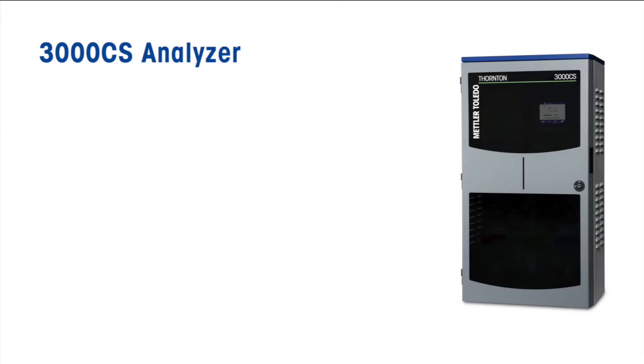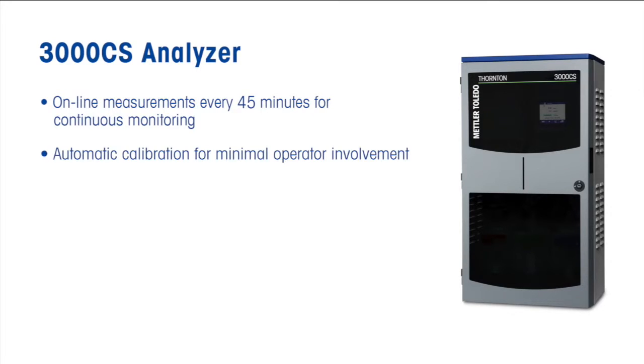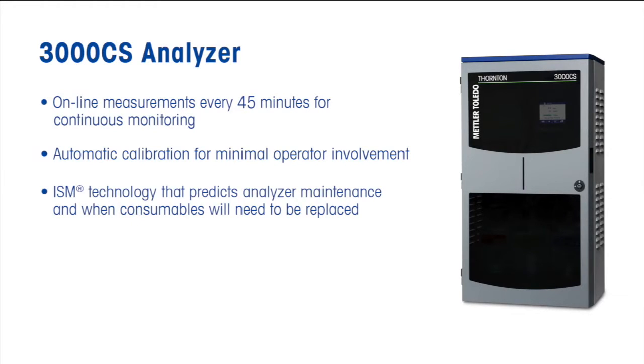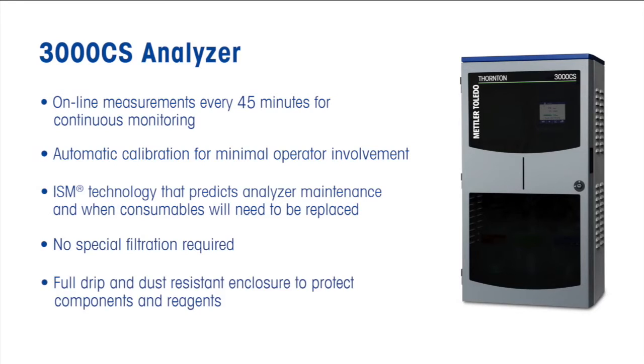The 3000 CS Analyzer meets the demand for convenient, ultra-low measurement of chlorides and sulfates with online measurements every 45 minutes for continuous monitoring, automatic calibration for minimal operator involvement, intelligent sensor management technology that predicts analyzer maintenance and when consumables will need to be replaced, no special filtration required, and a full drip and dust resistant enclosure to protect the components and reagents.